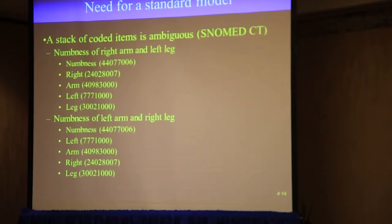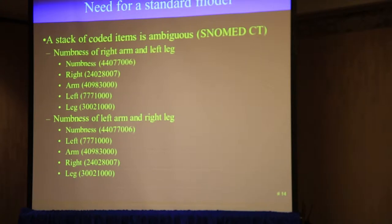If you're talking about modeling, you need to know somehow that right is modifying arm and left is modifying leg, and that numbness should be distributed across both of those body locations. That's the heart of the question.